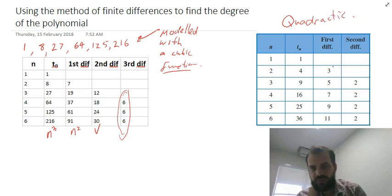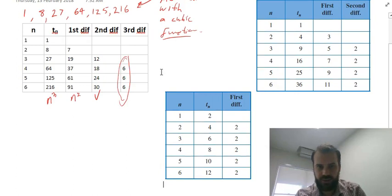And if you had a linear, then it would be the first difference that had a constant here. So that first difference would be a linear model. Something like this. So that would be a linear model there.